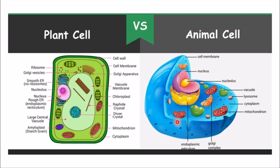So three main differences: First, cell wall is present in plant cell; cell wall is absent in animal cell. Second, we have a larger vacuole in the plant cell; small vacuoles are present in the animal cell. Third, chloroplast is present in the plant cell; chloroplast is absent in the animal cell.